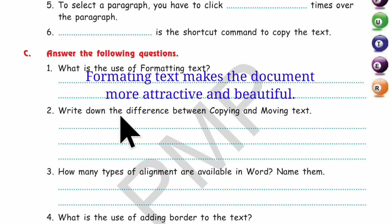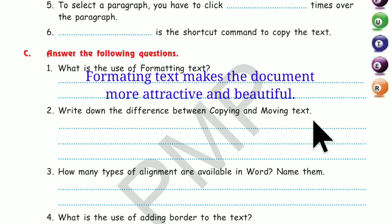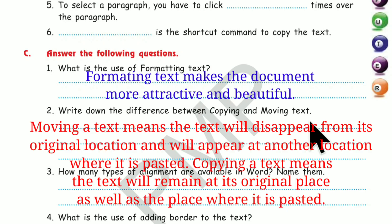Number 2. Write down the difference between copying and moving text. Moving a text means the text will disappear from its original location and will appear at another location where it is pasted. Copying a text means the text will remain at its original place as well as the place where it is pasted.